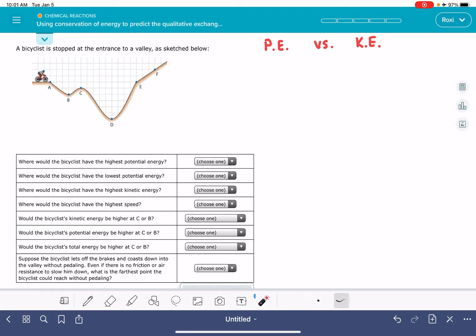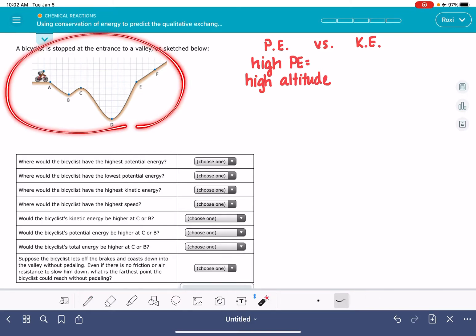Potential energy is defined as the ability to do work. And in this particular scenario, which is a bicyclist in a valley, the potential energy is defined as the bicyclist's ability to coast down the valley or the mountain. So in this particular scenario, when you are at a high elevation, that's going to correspond to a high potential energy. High potential energy is when you are up at high altitudes on this particular graph.